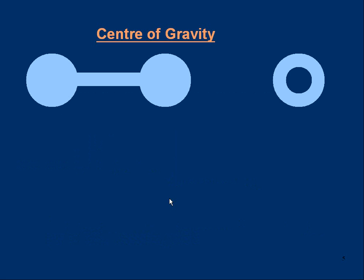Here's a couple of questions for you. There's a dumbbell shape and there's a donut shape — the mathematical term is a torus, with a hole in the middle. If you were asked to mark the weight on each of those objects, where would you draw the weight arrow? Pause if you want to think about that. The center of gravity of the dumbbell will be right in the middle. For the torus, the center of gravity is actually in the middle of the hole — you would draw it there.